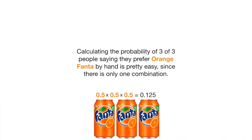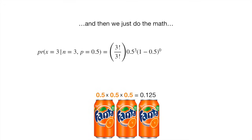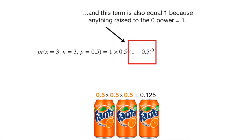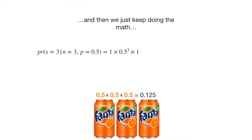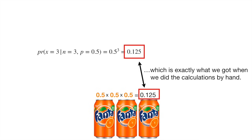Calculating the probability of 3 of 3 people saying they prefer orange Fanta by hand is pretty easy since there is only one combination. But we can just as easily use the fancy formula by plugging in x equals 3. This term equals 1, since we are dividing 3 factorial by 3 factorial. And this term also equals 1 because anything raised to the 0 power equals 1. This means that the probability of 3 of 3 people randomly preferring orange Fanta is 0.125, which is exactly what we got when we did the calculations by hand.